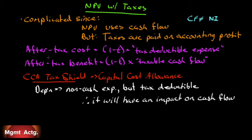So we have expenses and we have benefits. Our after-tax cost of a tax-deductible expense — not all cash outflows are tax-deductible expenses — is one minus our tax rate times the tax-deductible expense. So let's say I have an expense of $100. Because I pay that $100 and it's deductible from my income, if I pay a 30% tax rate, it saves me $30 in tax. So my after-tax cost is only $70.